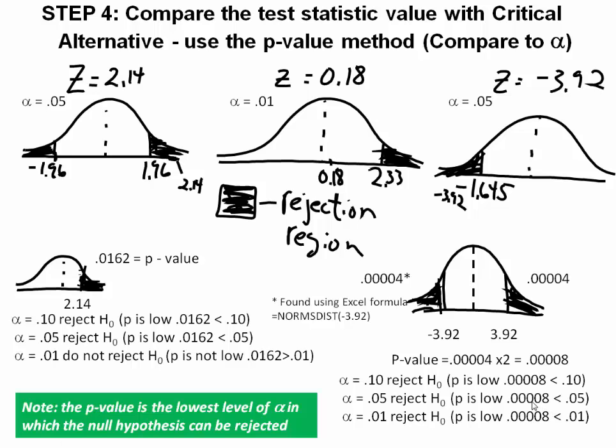In essence, the bottom line is that the p-value is the lowest level of alpha at which the null hypothesis can be rejected. In the real world, we normally are not given alpha. We compute the p-value. If the p-value is acceptable — because that's the lowest risk we can take — then we do not reject the null hypothesis. That is the end of step four.